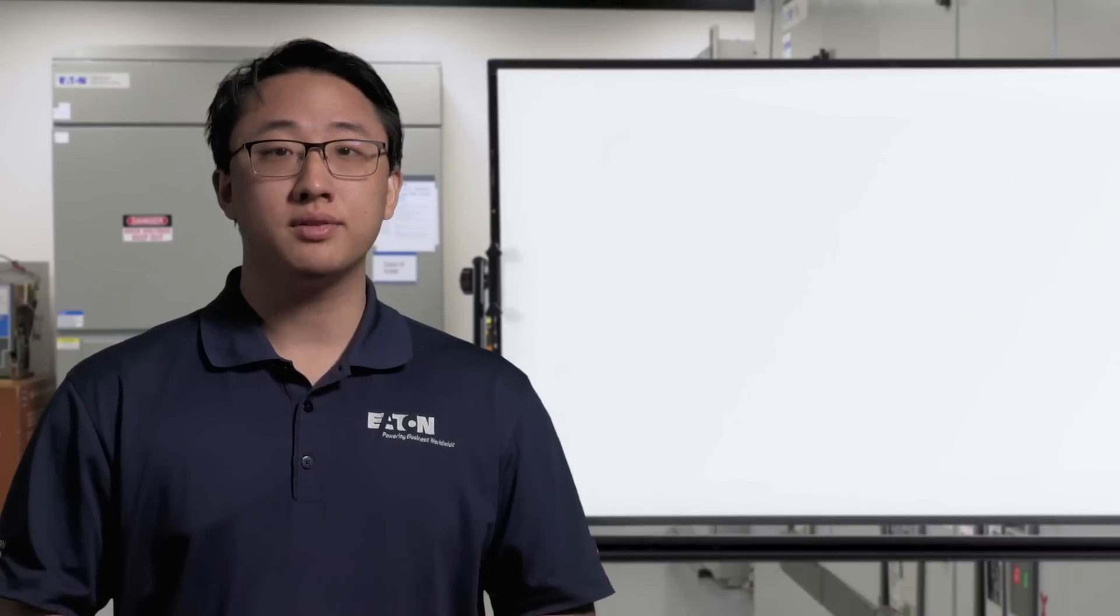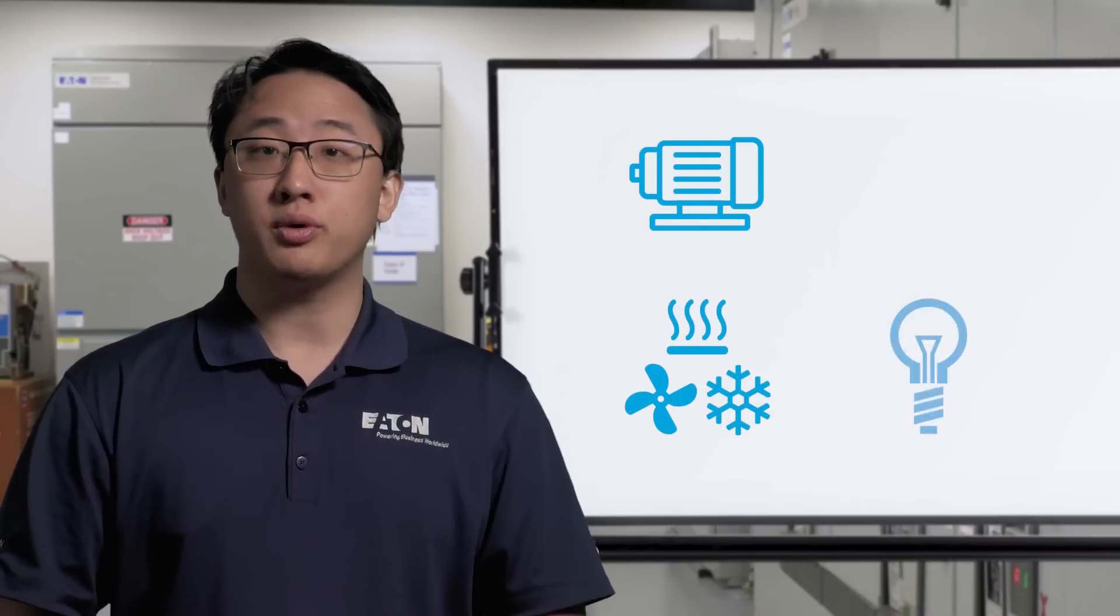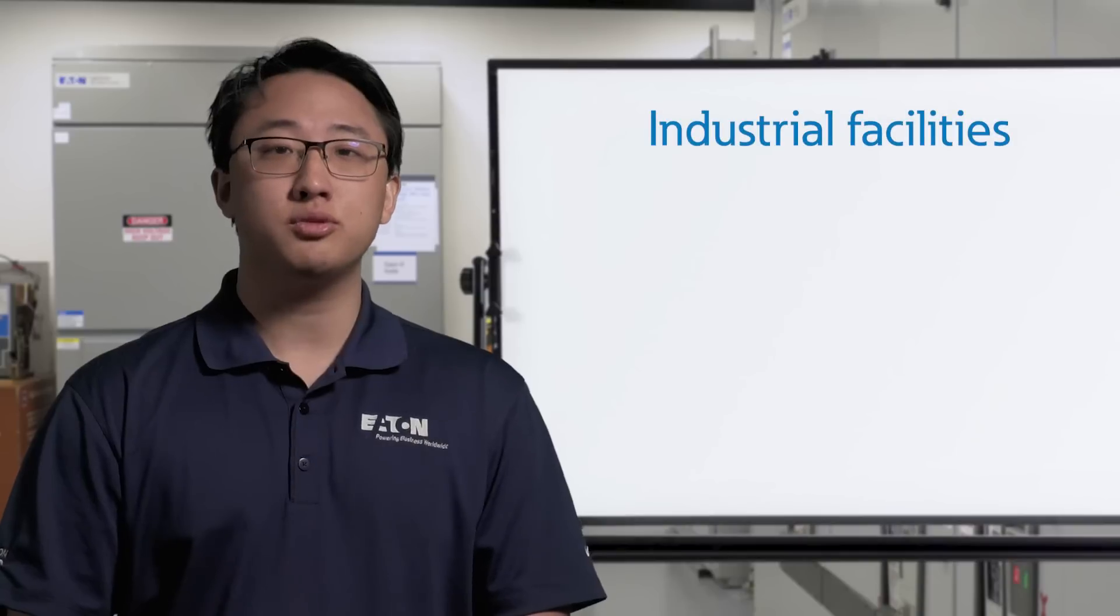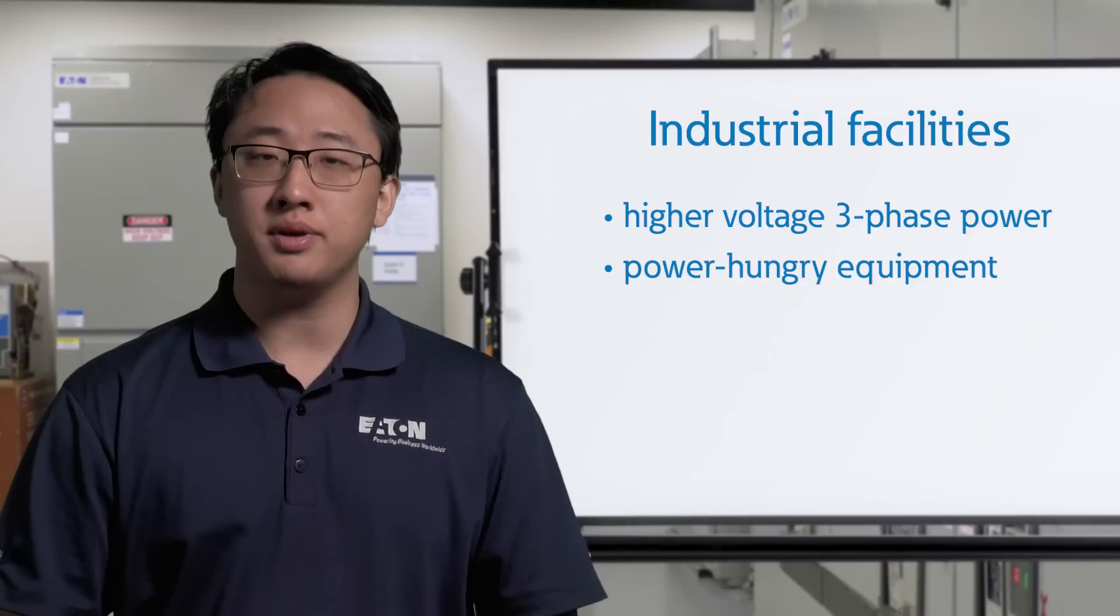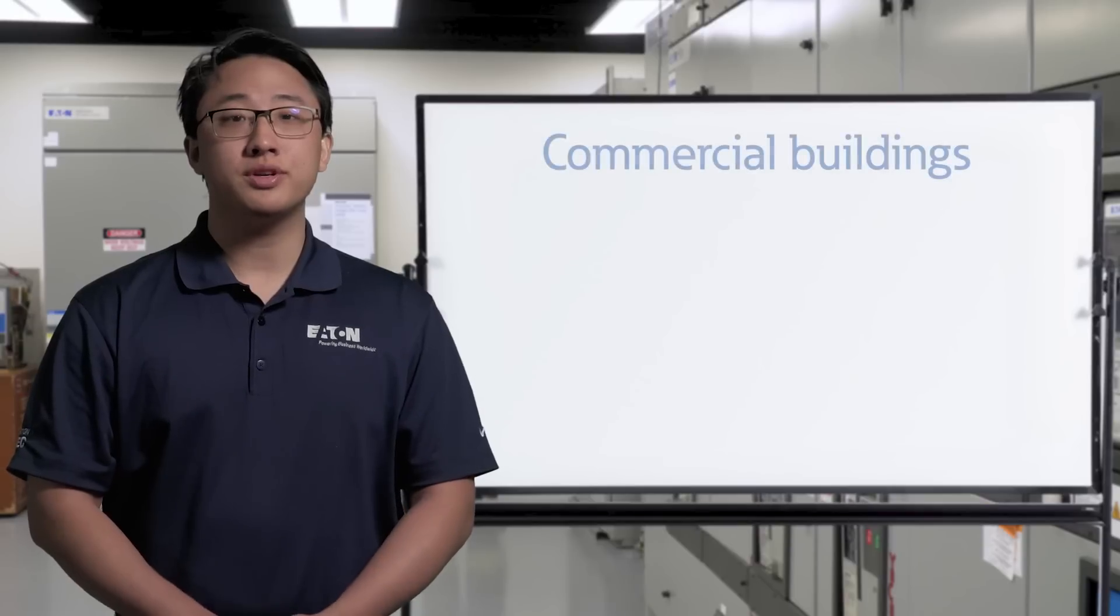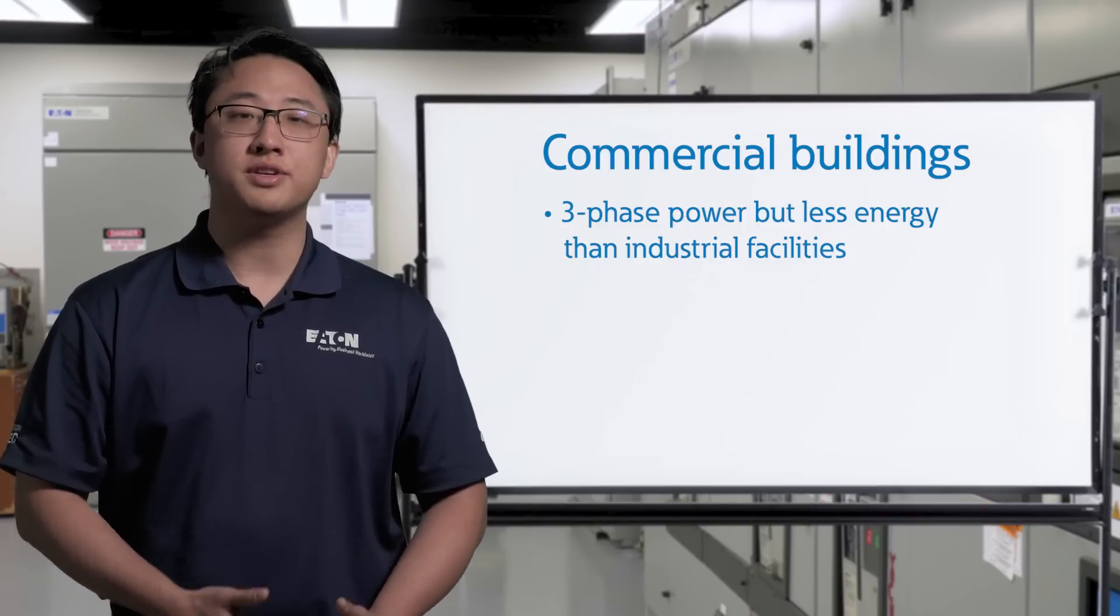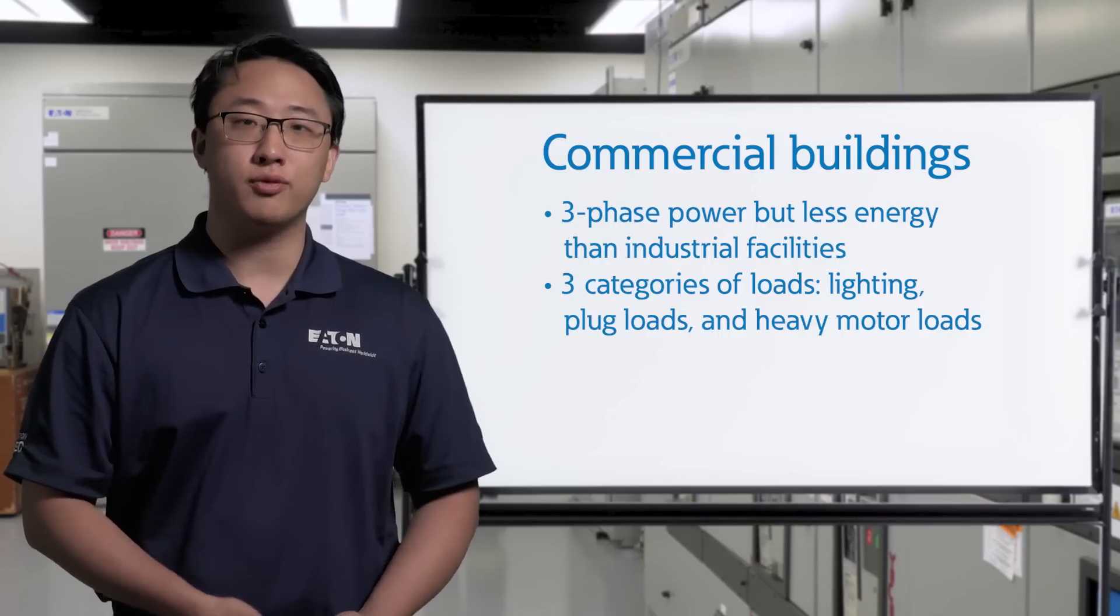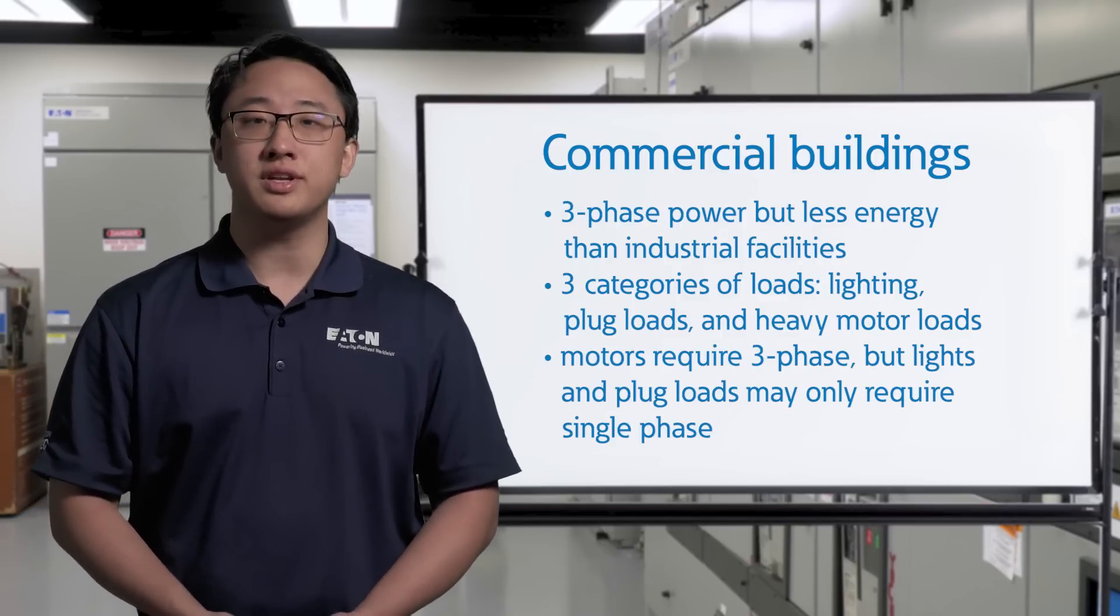Depending on the application, loads will require different voltage levels. Some require three-phase, some require single-phase, and still others may require a combination of both. In industrial applications, facilities will be designed for higher voltage three-phase power. This feeds many different types of power-hungry equipment, 70-80% of which are three-phase motors. Commercial buildings also run on three-phase power, but they usually draw less energy. Loads are broken up into three even categories: lighting for the whole building, plug loads like everyday electronics, and heavy motor loads for functions like HVAC. The motors will require three-phase, while lighting and plug loads only need single-phase.